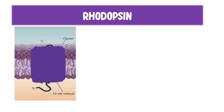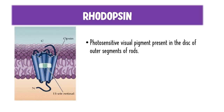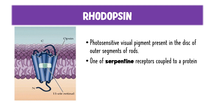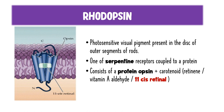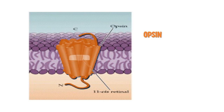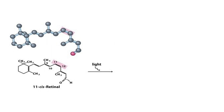Rhodopsin is a photosensitive visual pigment present in the discs of the outer segments of the rod. It is a G protein-coupled receptor — a serpentine receptor. It has two subunits: a protein called opsin and a carotenoid derived from vitamin A, also called vitamin A aldehyde, retinine, or most famously 11-cis retinal. In diagrams, opsin is shown in orange and the 11-cis retinal is a small component attached to it.